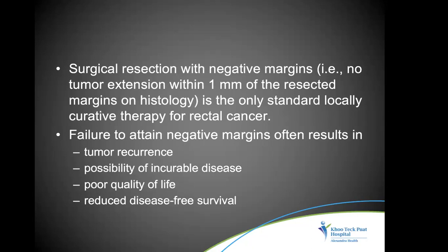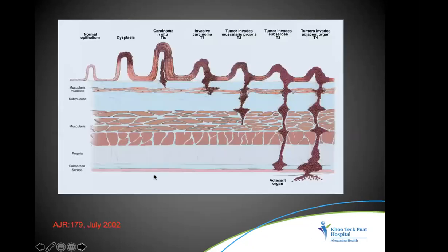Failure to attain a negative margin often results in tumor recurrence, risk of incurable disease, poor quality of life, and generally reduced disease-free survival. Generally, cancer begins as dysplastic epithelium and progresses deeper, involving different layers of the rectal wall — which we will go through in detail.